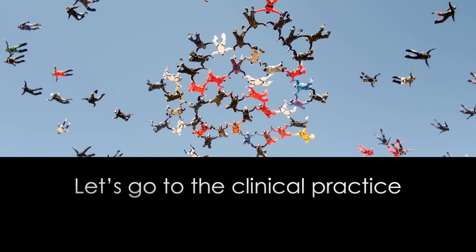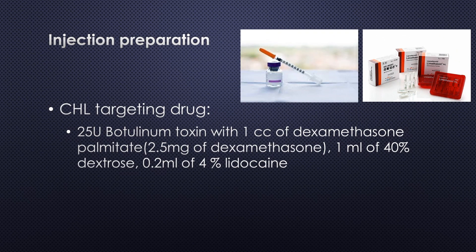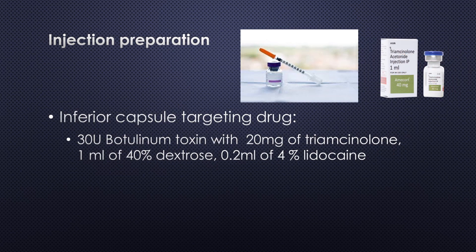Let's go to the clinical practice. I prepared two luer-lock syringes with 1.5-inch long needles. For targeting the coracohumeral ligament, I mixed 25 units of Botox with dexamethasone palmitate. And for targeting the inferior capsule, I prepared 30 units of Botox with 20mg of triamcinolone.